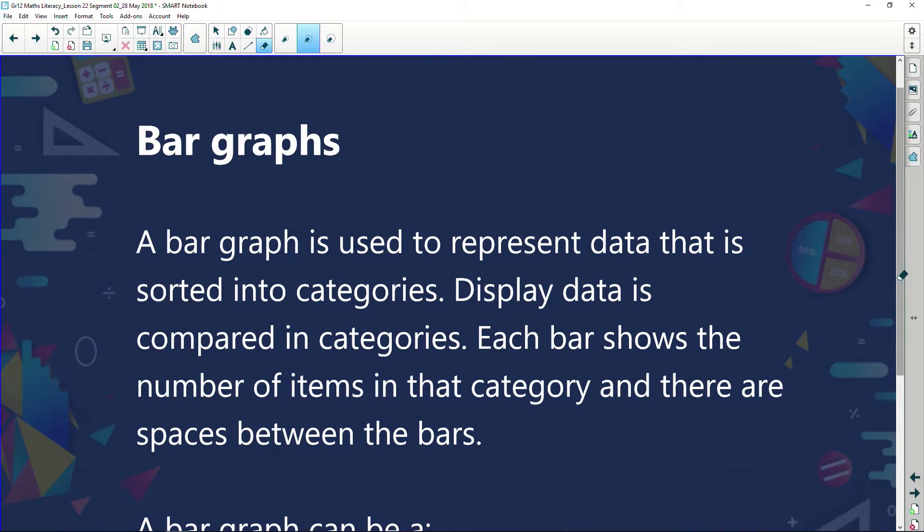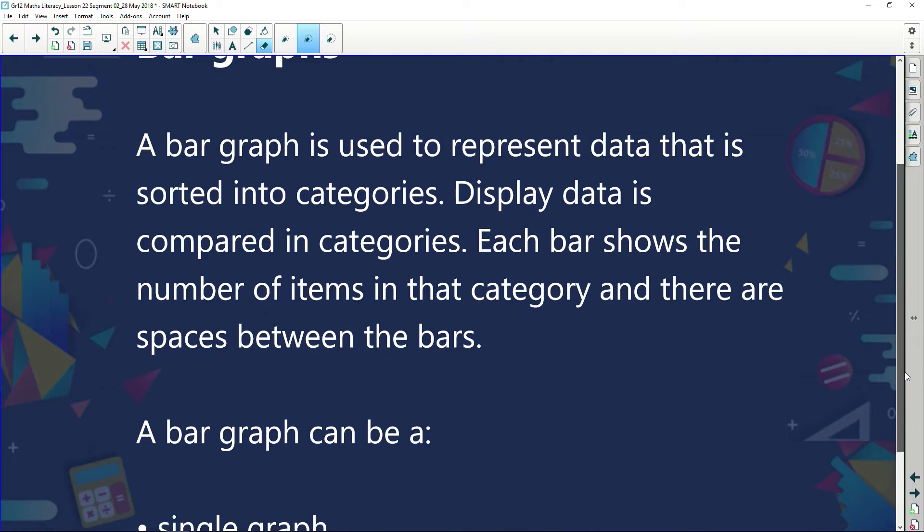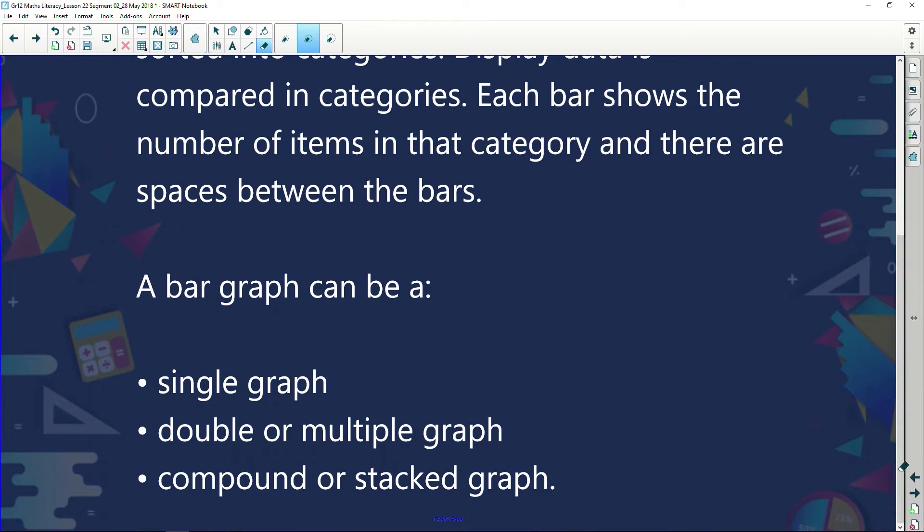A bar graph is used to represent data that is sorted into categories. Display data is compared in the categories. Each bar shows the number of items in that category and there are spaces between the bars. A bar graph can be a single graph, a double graph, also known as a multiple graph, or a compound graph, also known as a stacked graph.